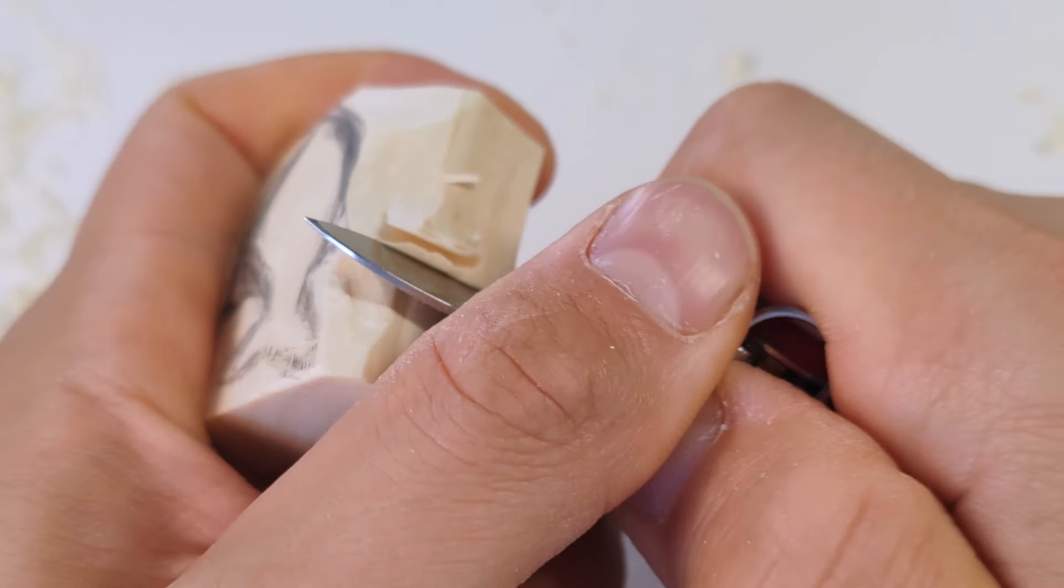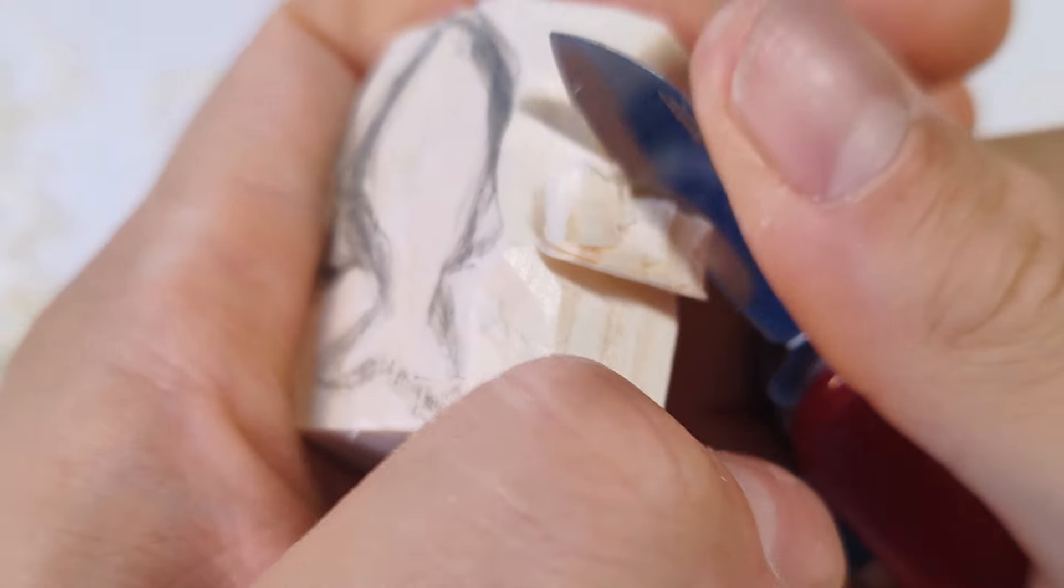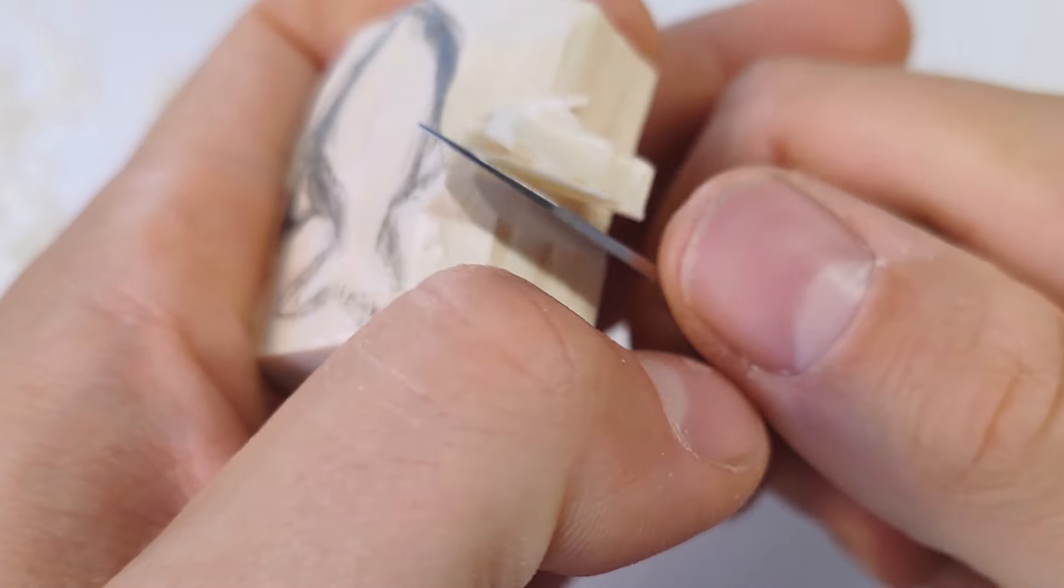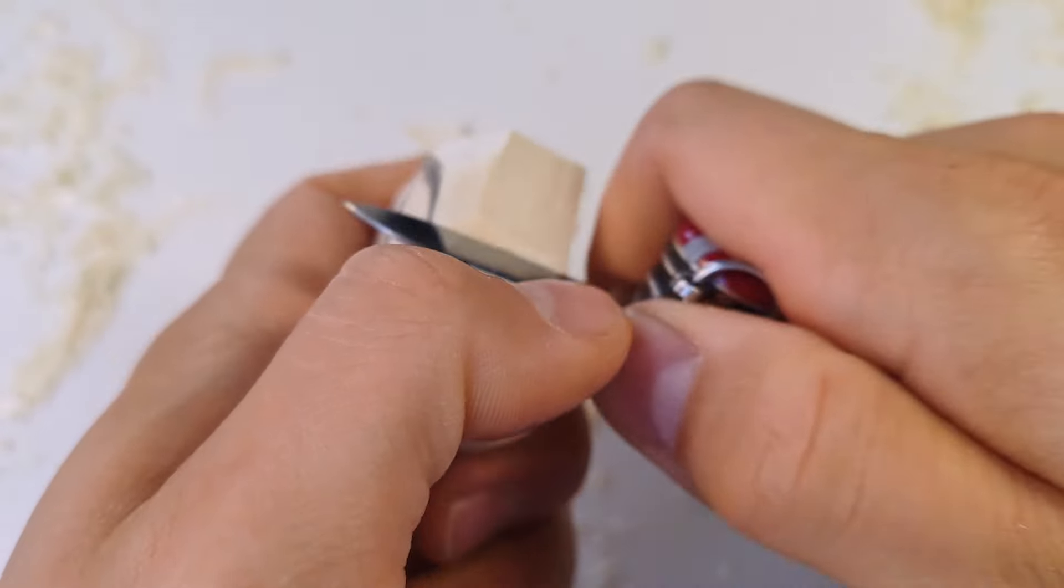A v-cut comes in very handy even in this kind of situation where I have to remove parts that could also be taken care of with rough cuts. By making this small v-cut over here I can then remove bigger chips with rough cuts.